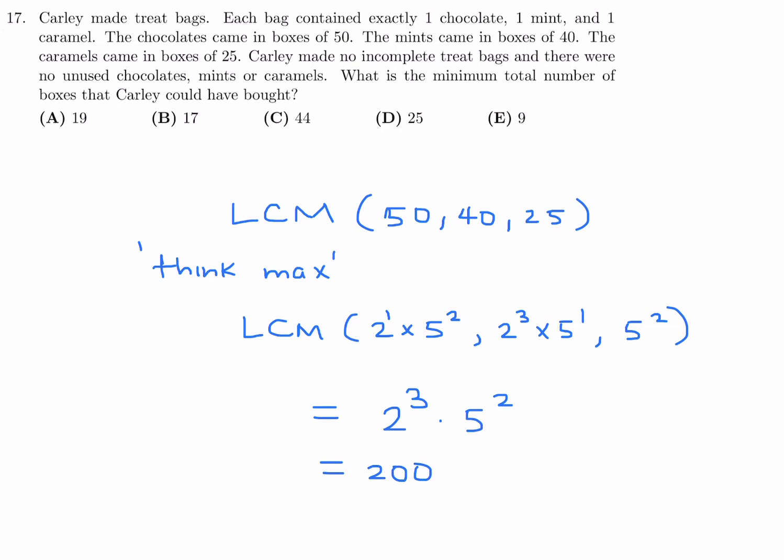So that means 200 is very important because it allows us to figure out how many boxes for each of them. For the chocolates, they come in boxes of 50, so I have to take 200 and divide by 50, and that gives me 4 boxes. For the mints, they come in 40, so I have to take the 200 and divide by 40, that gives me 5 boxes. For the caramels, they come in boxes of 25, so I have to take the 200 and divide by 25, and that gives me 8. And now these are the number of boxes. Add them all up: 4 plus 5 plus 8 is 17 boxes in total. Number 17, the answer is 17, and that's choice B.